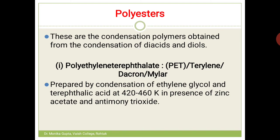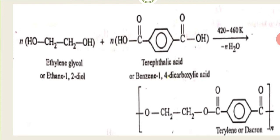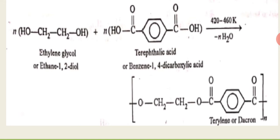To make Dacron, you condense ethylene glycol with terephthalic acid at 420 to 460 Kelvin in the presence of zinc acetate and antimony trioxide. This is ethylene glycol and this is terephthalic acid — terephthalic acid has two carboxylic groups at the para position on a benzene ring.